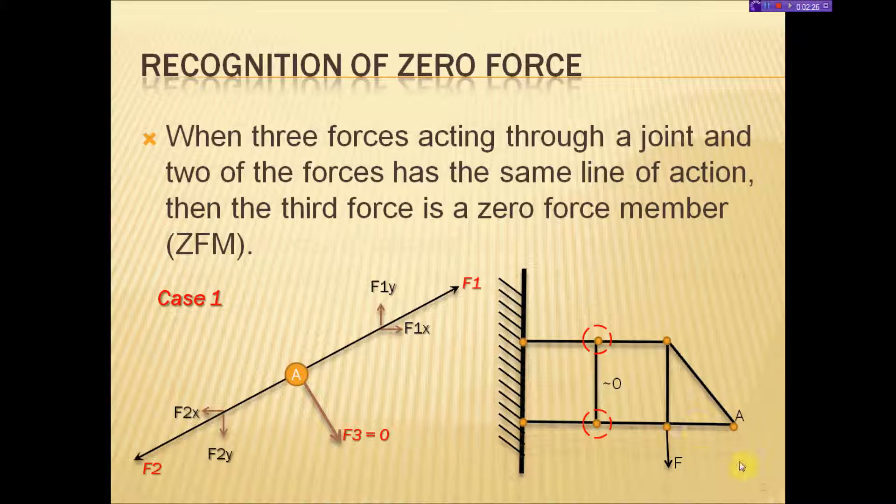Two of them are in the same line of action. That means this one is a zero force member. There is another scenario, the second case that we are going to speak about in a couple of slides from now, but this is called a bird beak, and these are zero force members too.